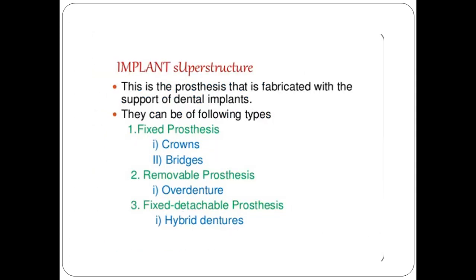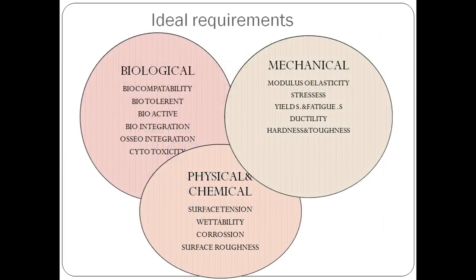The implant superstructure is the prosthesis fabricated with the support of dental implants. It can be of the following types: fixed prosthesis — crown or bridges; removable prosthesis — over-denture; or fixed detachable prosthesis — hybrid dentures.